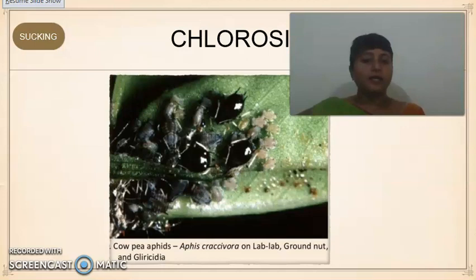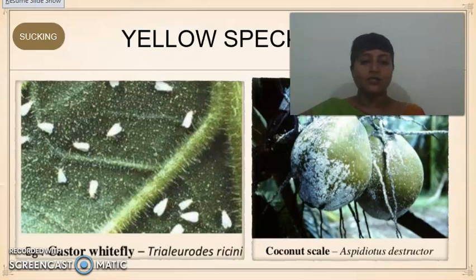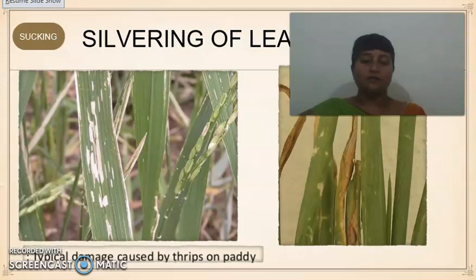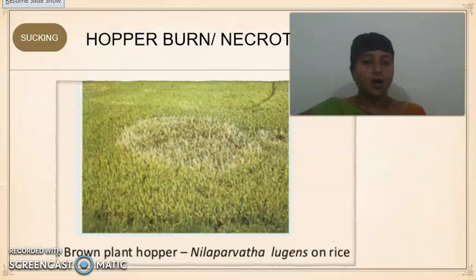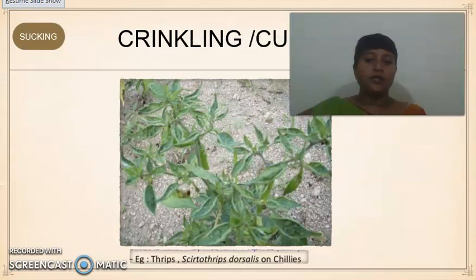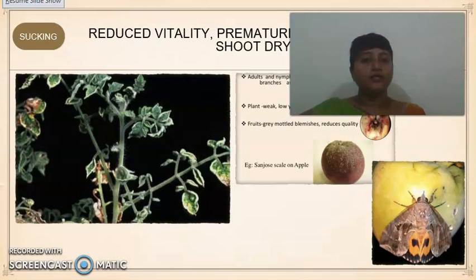Moving on to sucking pests — they stay outside the plant parts and possess piercing and sucking mouthparts. They extract plant sap, resulting in chlorosis and yellow speckling, as in the case of coconut scale and castor whitefly. They may cause silvering of leaf surfaces when infected with thrips, and hopper burn or necrotic brown lesions as in Nilaparvata lugens, the brown planthopper. Sucking pests can also cause crinkling and curling of leaves, as in chilli, drastically reducing plant vitality. Feeding on fruits causes premature shedding, and on stems, the shoot begins to dry off.